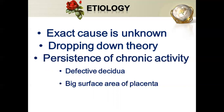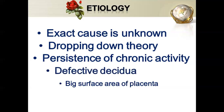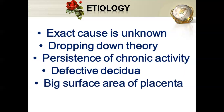The next theory is persistence of chorionic activity. If the chorionic villi are not working properly, placental attachment in the upper uterine segment becomes difficult. Third, if there is a defect in the decidua — the endometrium — it cannot hold the placenta in the upper uterine segment, causing it to drop down. Finally, a big surface area of the placenta, mainly seen in multiple pregnancies, may extend into the lower uterine segment.